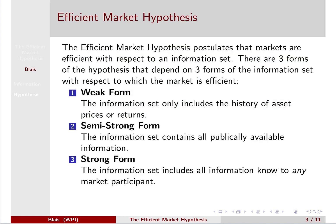The efficient market hypothesis has three forms and it postulates that markets are efficient with respect to information sets. The three forms of this hypothesis depend on the information set with respect to which the market is efficient.